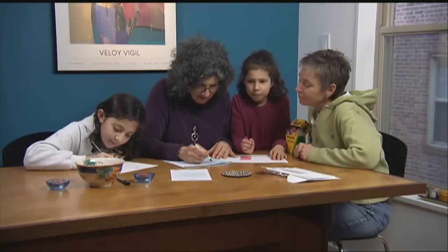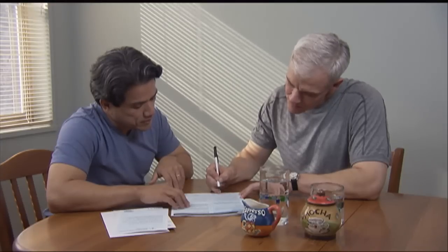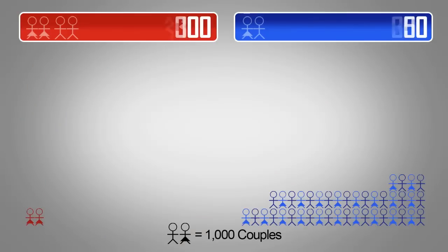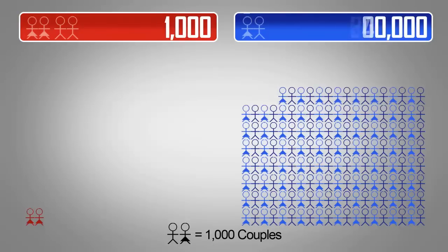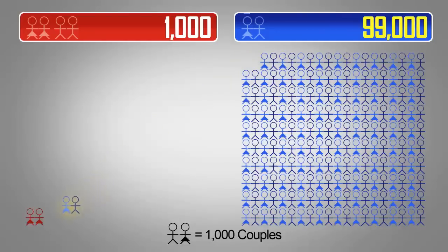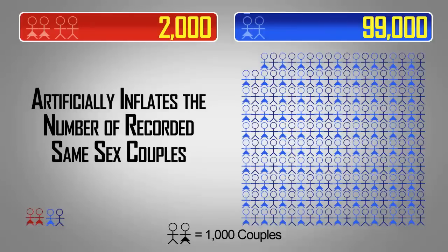So, how does this type of data capture error affect the number of same-sex couple results for the 2010 Census? Let's say that a county has 1,000 same-sex couples and 100,000 opposite-sex couples. If just 1% of the opposite-sex couples are erroneously reported as same-sex couples, that's 1,000 additional couples now listed as same-sex. This mismarking results in responses that artificially inflate the number of recorded same-sex couples.